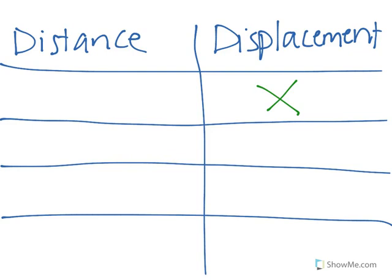Do you remember which quantity must be specified using a number and a unit? That's a bit of a trick question. Both distance and displacement require a number and a unit.